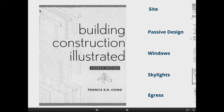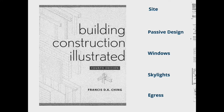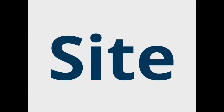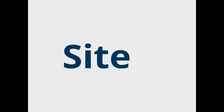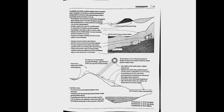In terms of what we're going to be looking at today, we're going to look at site issues, passive design, windows, skylights, and ultimately finishing with egress. That's the roadmap for where we're going. Starting with the whole issue of site, let me pop over and start looking at some of the different considerations that we need to start thinking about.